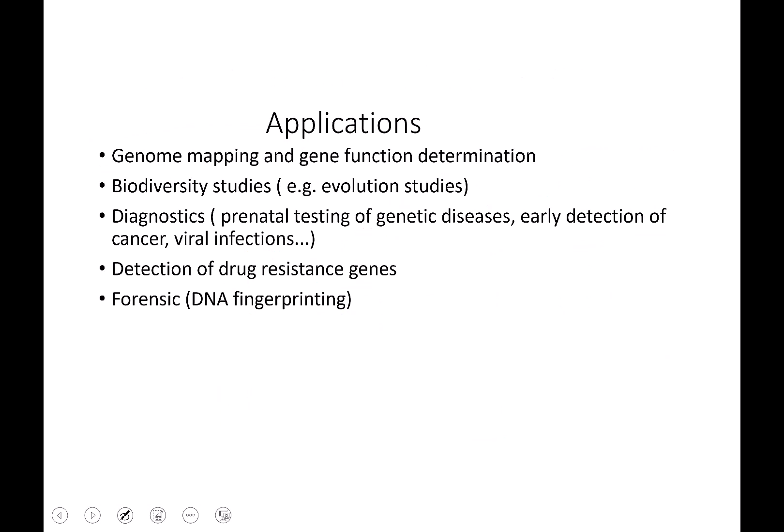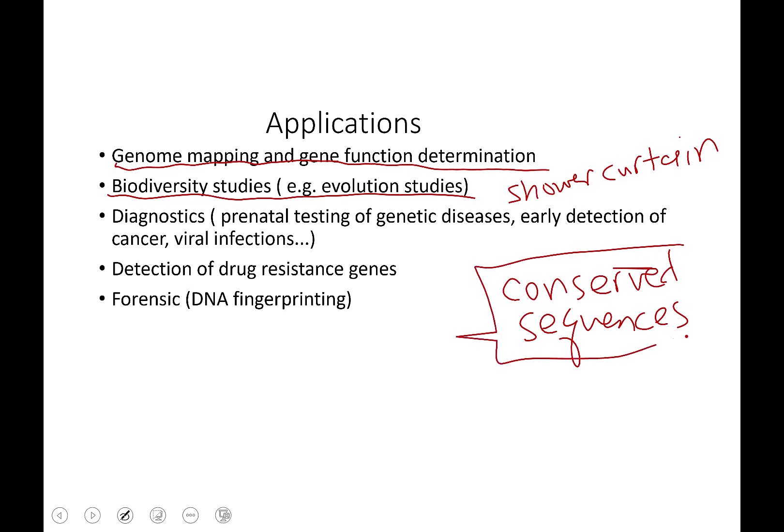So what are some applications of PCR? Genome mapping and gene function determination. Biodiversity studies. So if you take a soil sample, people used to do these ridiculous things when they first learned how to do this, they would take swabs of their shower curtain, which is just lovely. They would take swabs and then they do PCR and find out which microorganisms because they have conserved sequences from different microorganisms. And so they know that those are, they put those primers in your pot and you can find out that you have salmonella or something growing on your shower curtain.